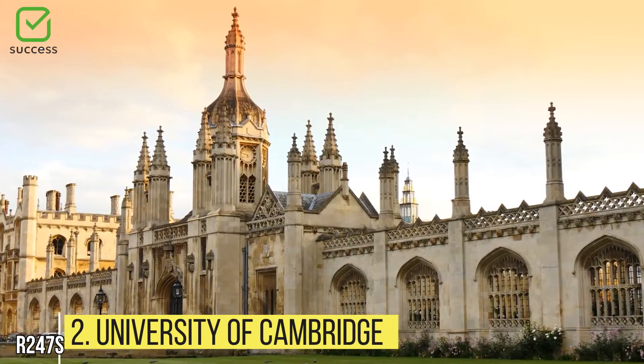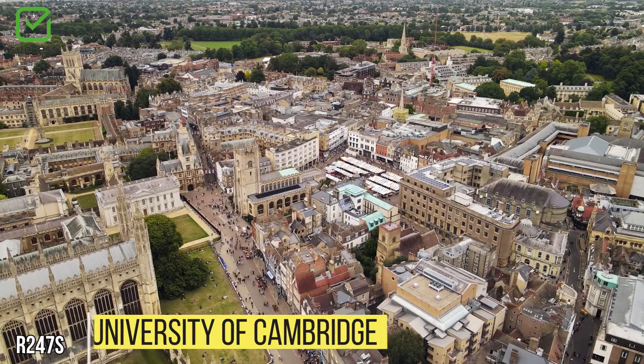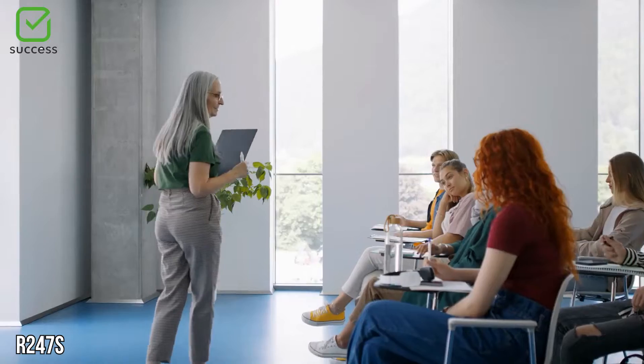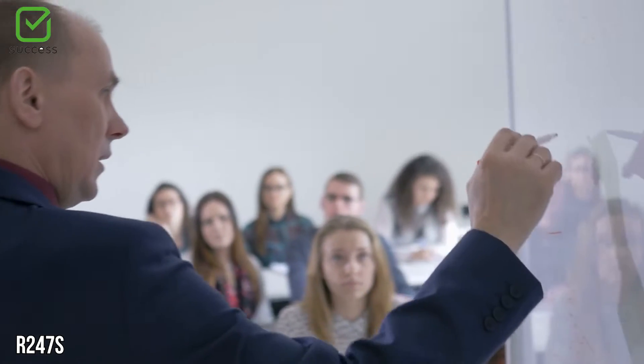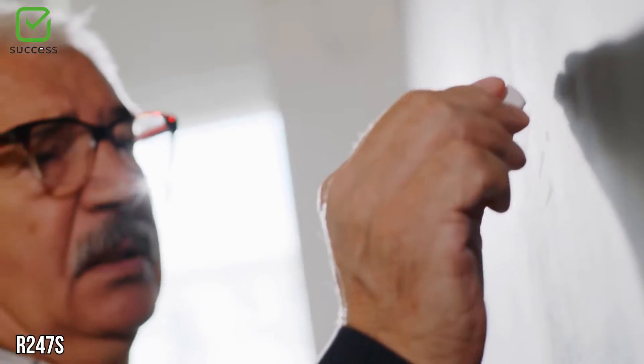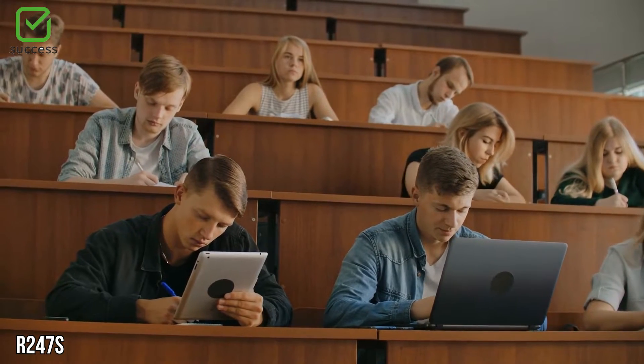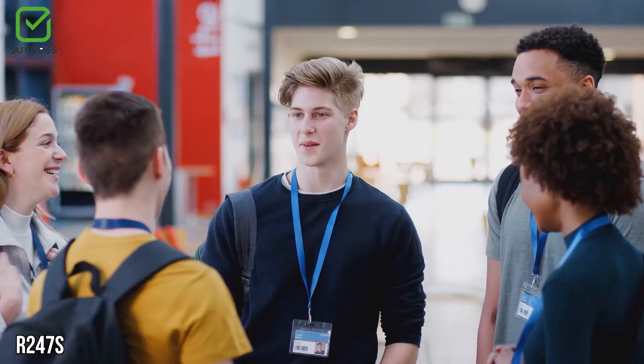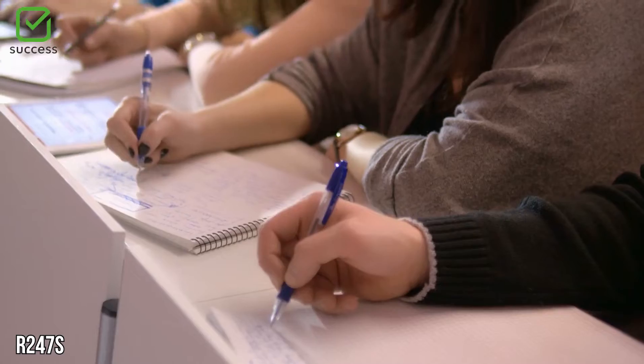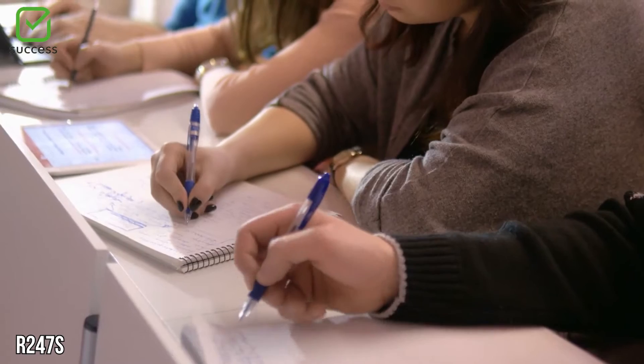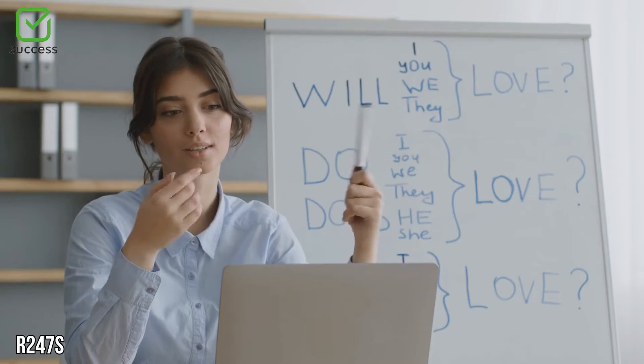University of Cambridge. University of Cambridge undergraduate computer science courses begin with a core selection of modules that give students a solid understanding of the subject's fundamental concepts and principles. Students have the opportunity to specialize in a number of modules throughout their second and third years of study. In this course, you will learn about all areas of current computer science as well as the underlying theory and foundations in economics, law, and business.